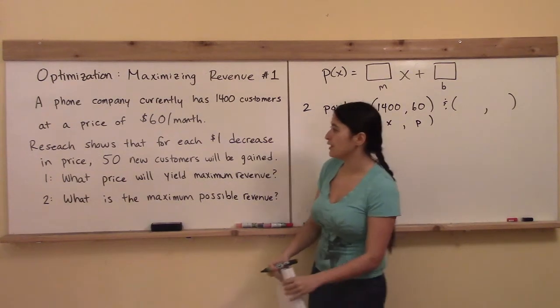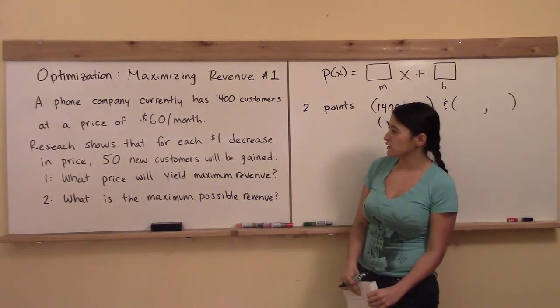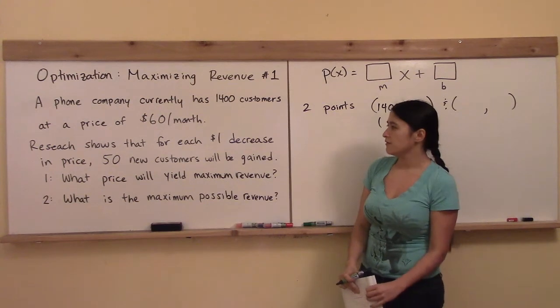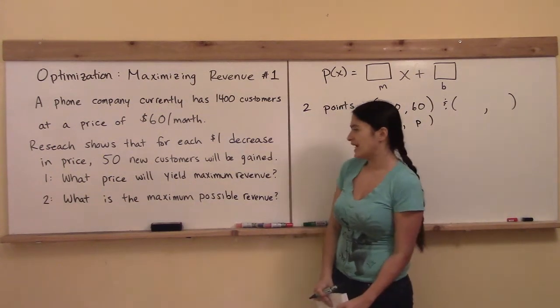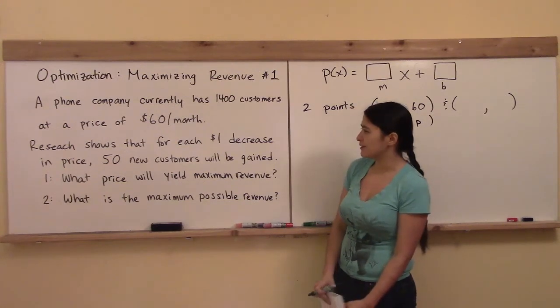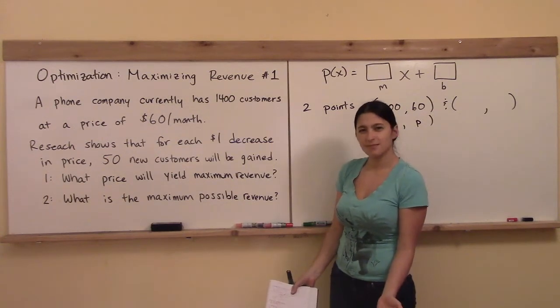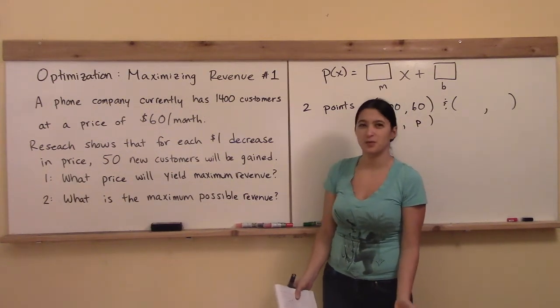let's see if we can search for another point. Research shows that for each dollar decrease in price, 50 new customers will be gained. Does that mean my next point is like 1,50? No.